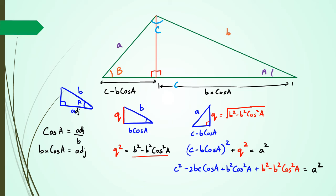Now as you can see, the B squared cos squared A terms cancel each other out, so I end up with B squared plus C squared minus 2BC cos A equals A squared. And ladies and gentlemen, that is the cosine rule equation — that's how you get the proof for it.